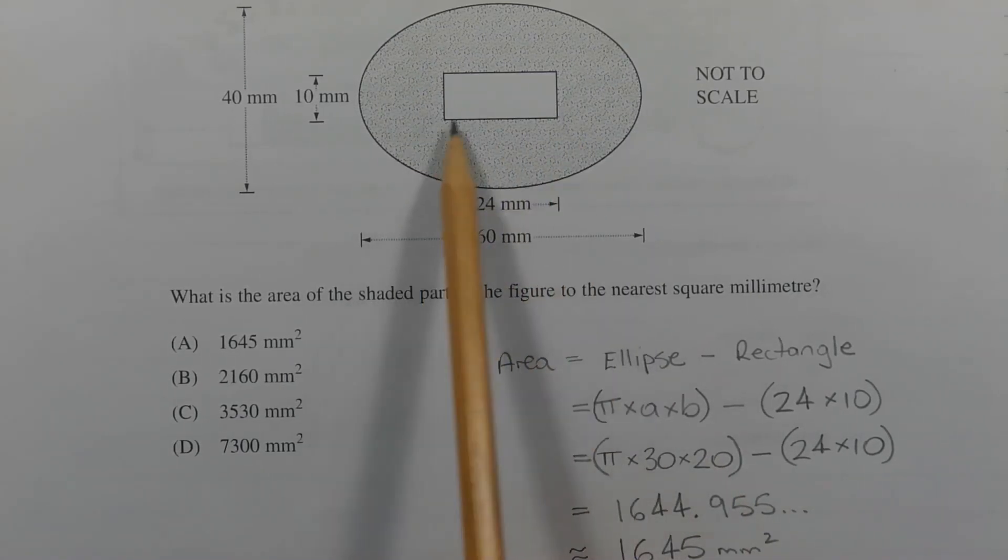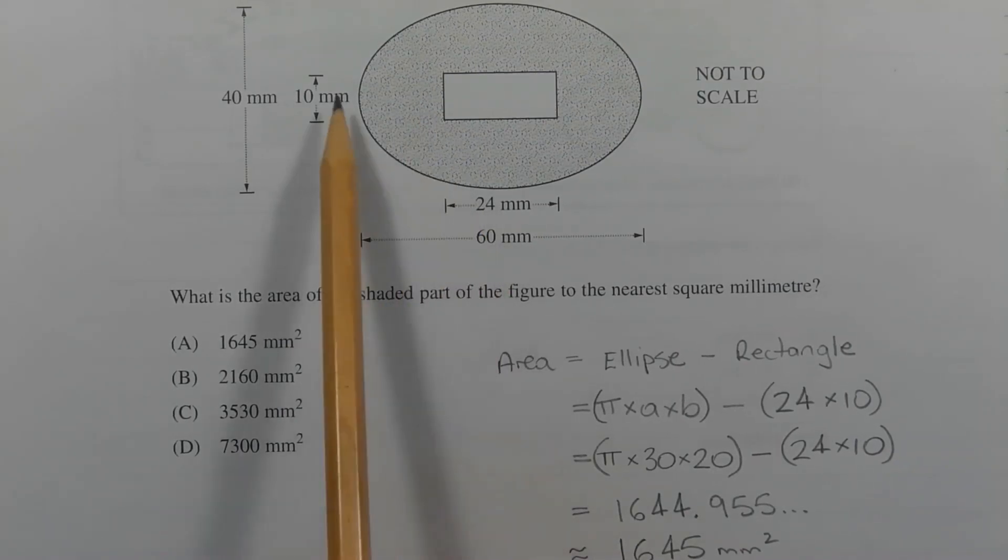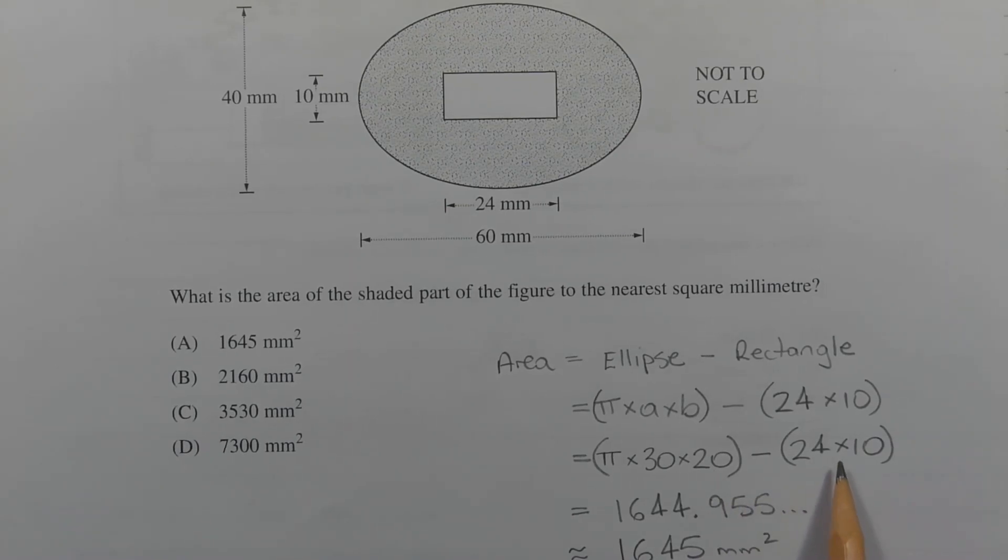The length of the rectangle is 24mm, and the width of the rectangle is 10mm. So the area of the rectangle is 24 times 10. So to put that all together, the area is equal to π times 30 times 20 minus 24 times 10.